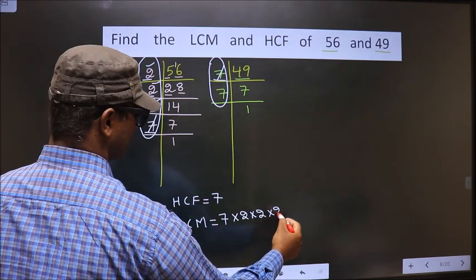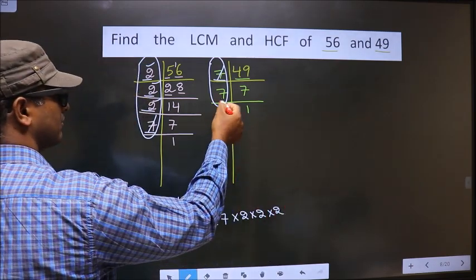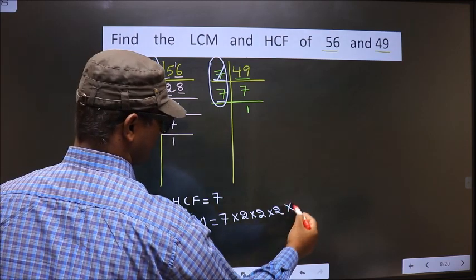So, times 2, times 2, times 2. And here the left out numbers are 7. So, times 7.